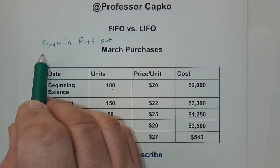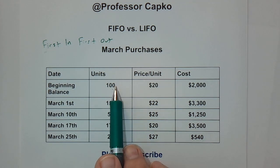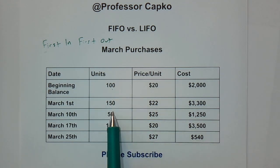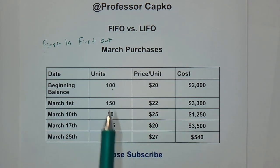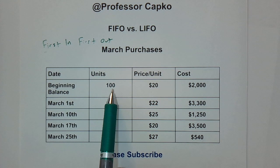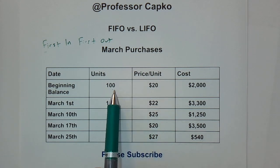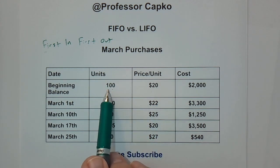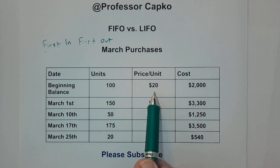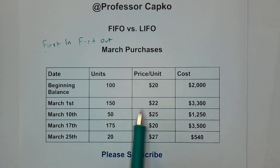If we do sell units, under first in first out we're going to sell them starting with the first group, then move down to the next group when those are used up. For example, if our first sale is 50 units, they would all come from the first group at $20 per unit. If the sale is 150 units, the first 100 come from here at $20 and the remaining 50 from the next group at $22 per unit.